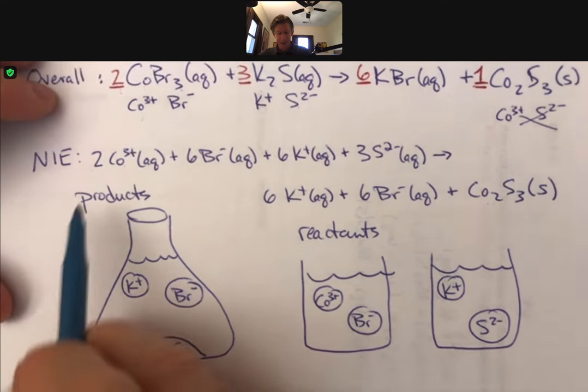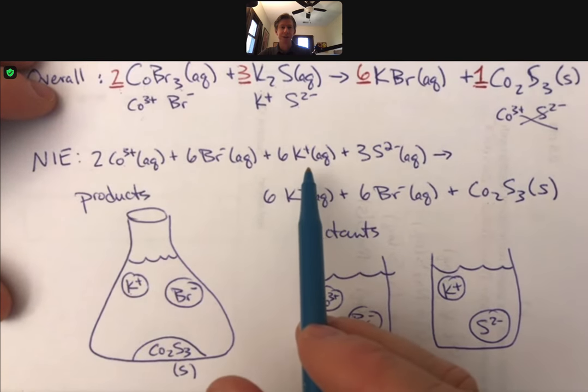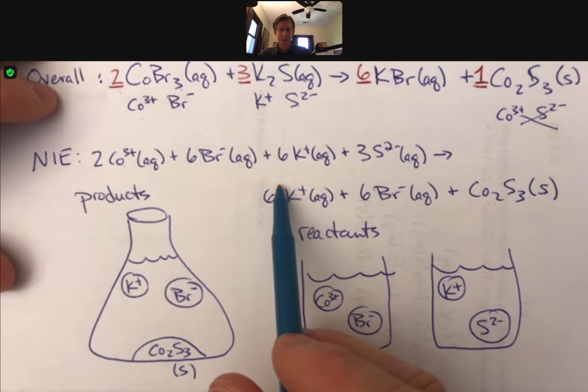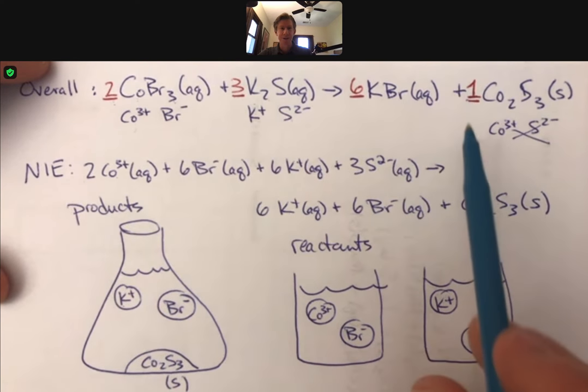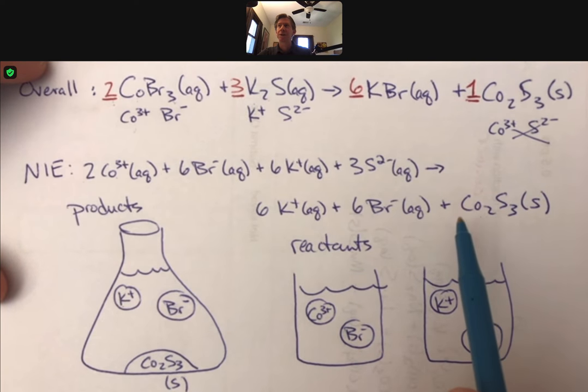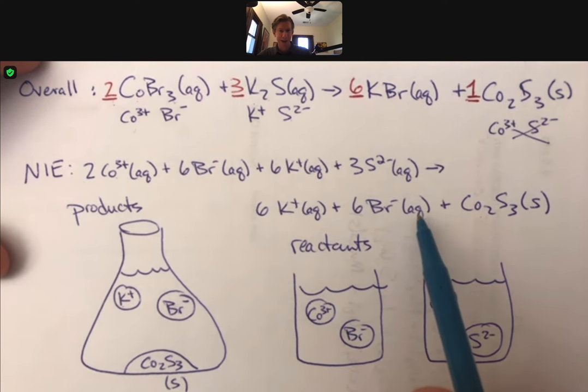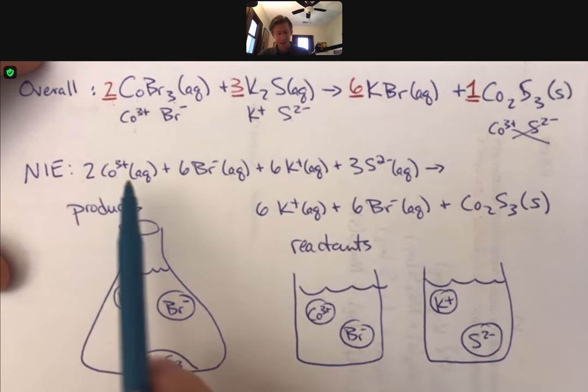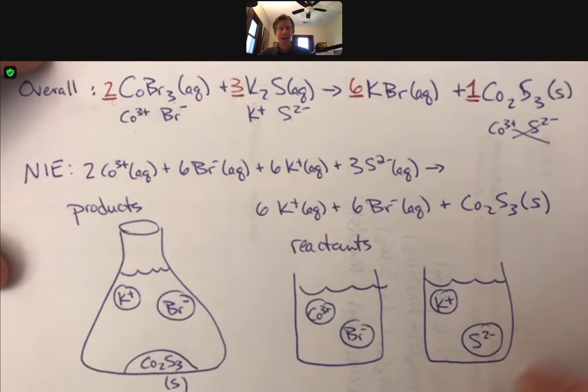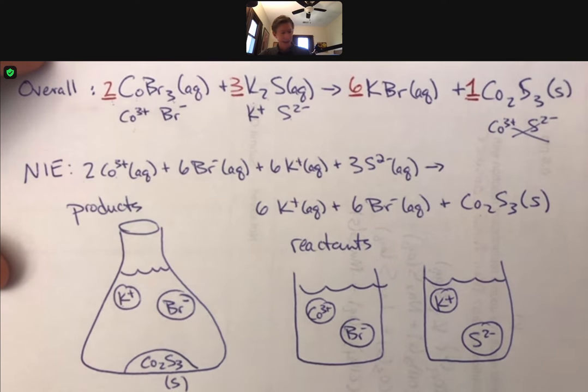Right, so the NIE represents the physical states of the actual things, whereas the overall reaction represents sort of how we would do the math. Like that's, we usually use the overall for math. We use the NIE to understand what actually is happening. And then we do the TIE. The TIE is the total ionic equation. And we use the total ionic equation to tell what reaction actually happened because we've crossed out the spectator ions.